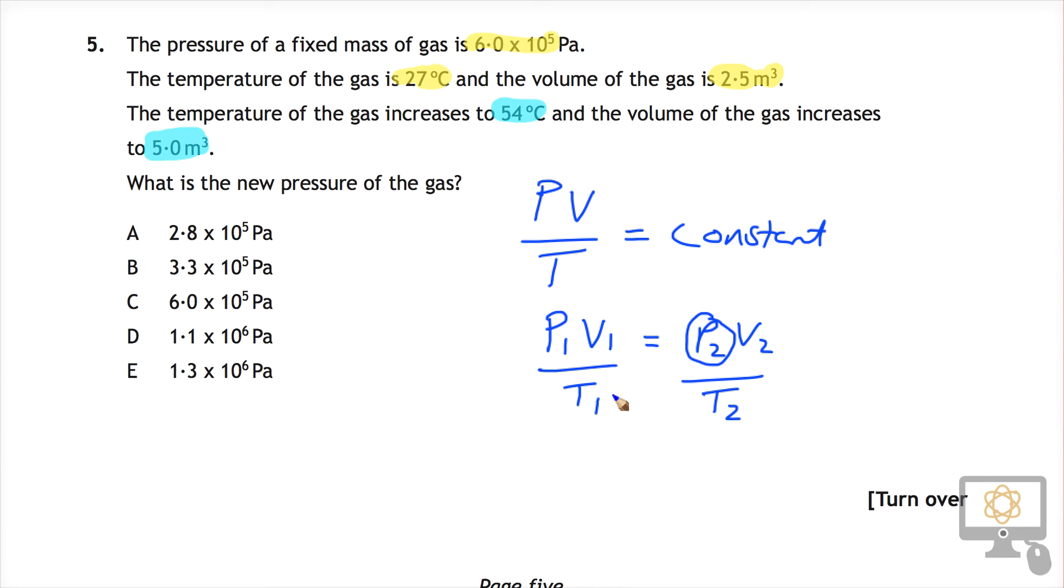I'm just going to clear this now and we can start again because I'm running out of room. We'll write up the formula again: P₁V₁/T₁ equals P₂V₂/T₂.